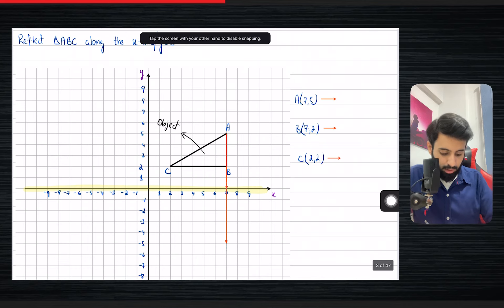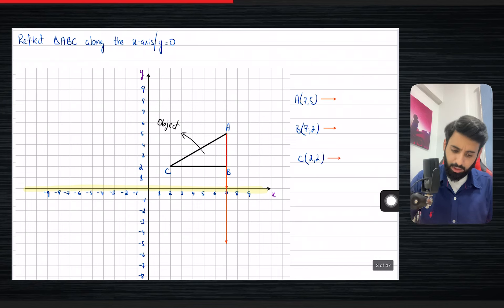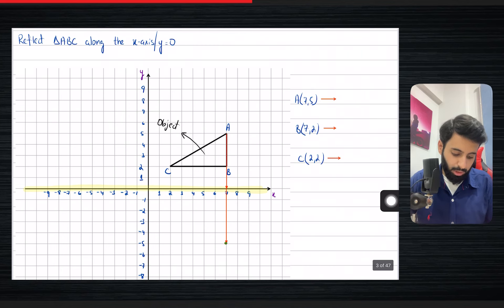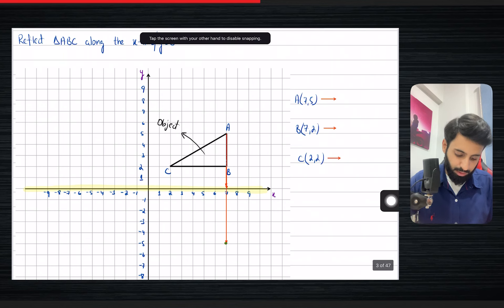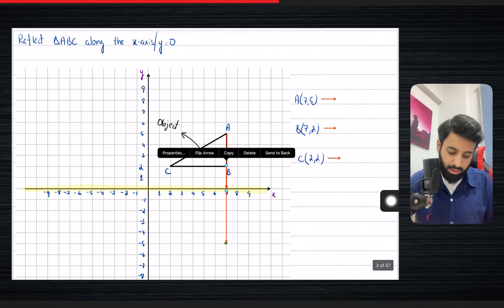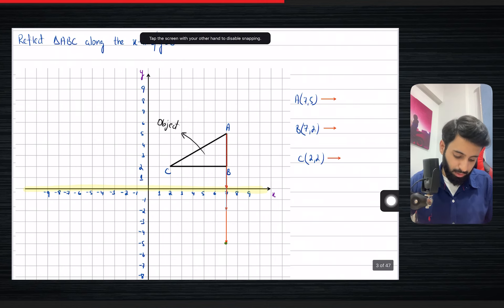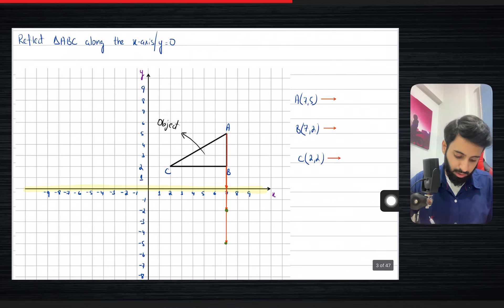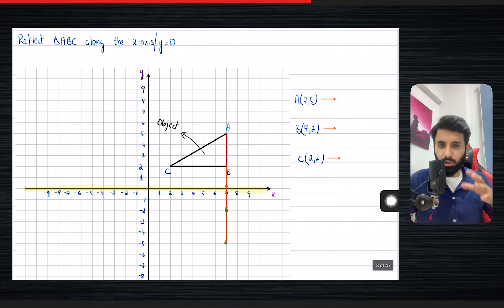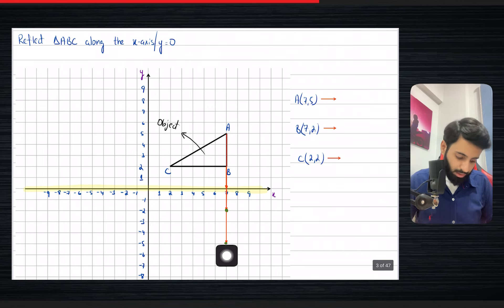So counting one, two, three, four, five — there you go, this is where the image ends up. I'll mark it in green so it's easy to distinguish. Now for point B: it's two units above the line of reflection, so once we reflect it, it's going to go two units below. Now I'd like us to write down the reflected coordinates so we can come up with a pattern.